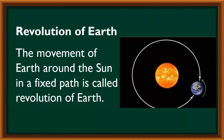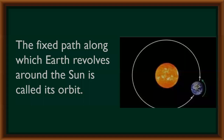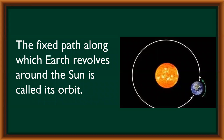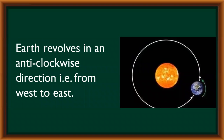Revolution of earth. The movement of earth around the sun in a fixed path is called revolution of earth. The fixed path along which earth revolves around the sun is called its orbit. Earth revolves in an anticlockwise direction from west to east.